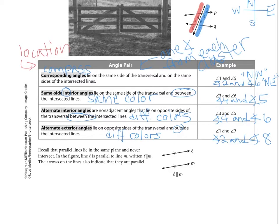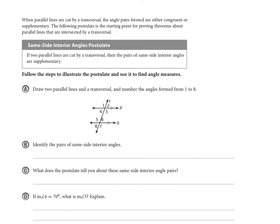To recap: all these angle pair names refer to their specific location relative to the transversal, with one angle coming from each cluster. Same-side angles are the same color; alternate angles are different colors. That's a quick summary of our four new vocabulary words.